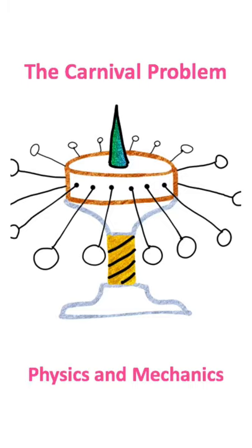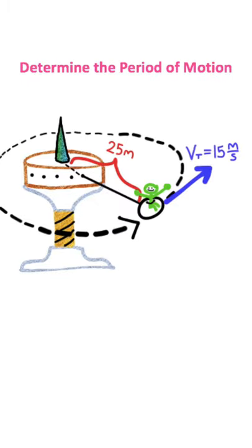Let's solve the carnival problem in physics. This is a rotational motion problem that involves the spinning carnival ride, where we are given our tangential velocity.